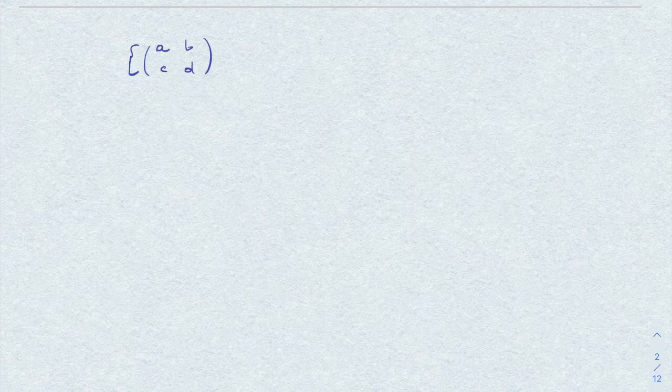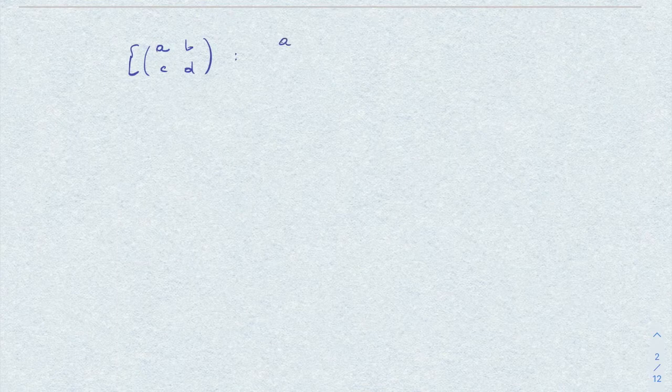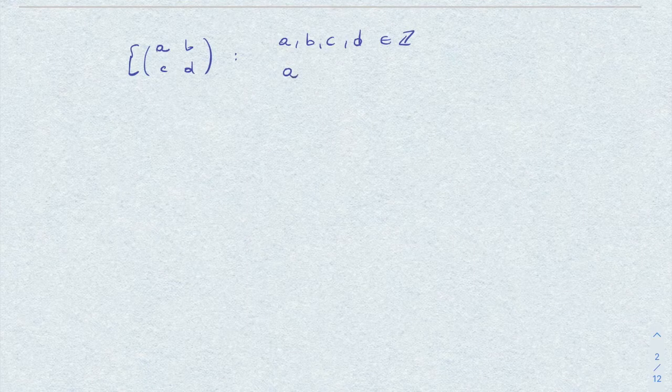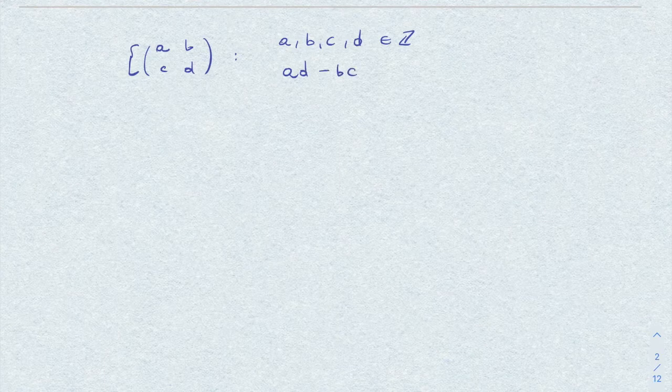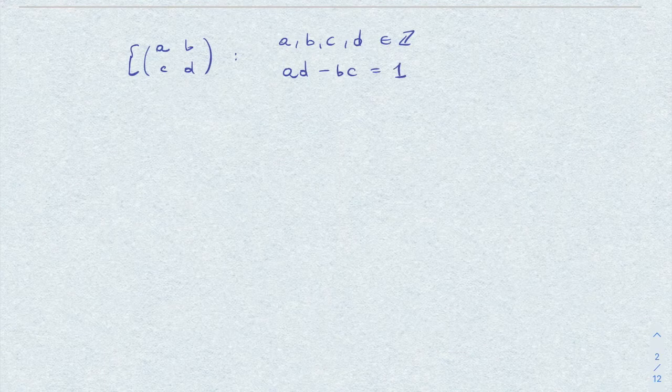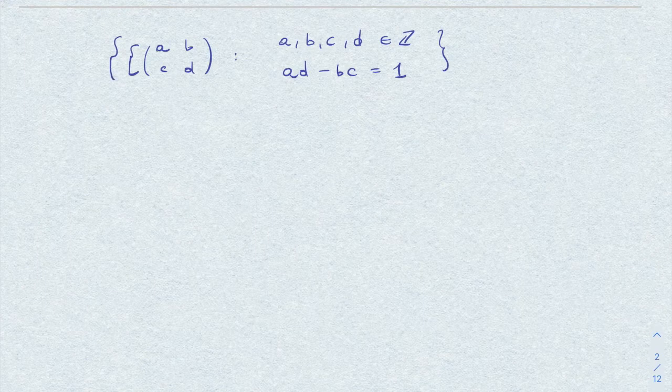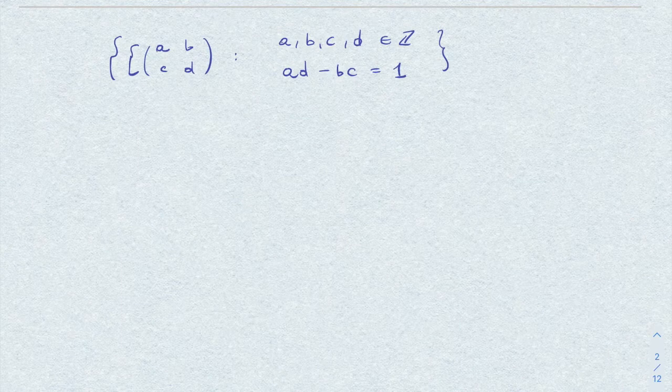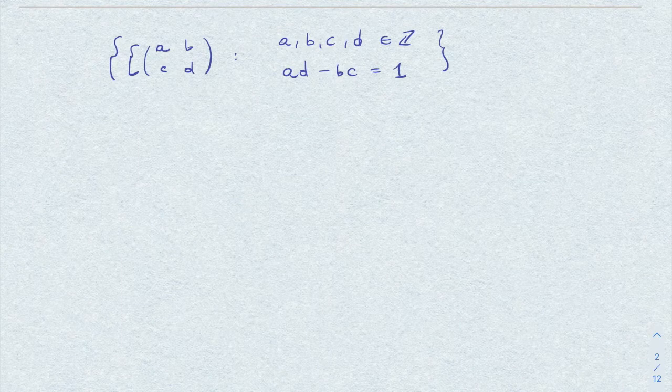The matrices we want to study are 2×2 matrices of the form abcd, where a, b, c, and d are integers, and the determinant of the matrix is 1, namely ad minus bc is equal to 1. This, as we know already, is a group under matrix multiplication,